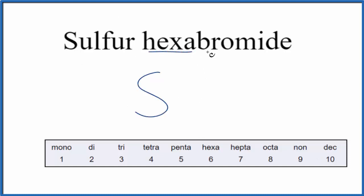And then we have hexabromide. Hexa means six, like a hexagon, so we have bromine, Br, and because of the hexa, we have six bromine atoms.